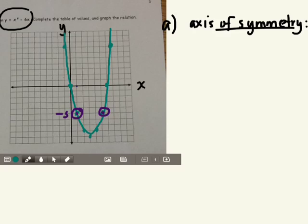Where is this located though? What's the coordinate of this point? 1, negative 5, and this is 5, negative 5.